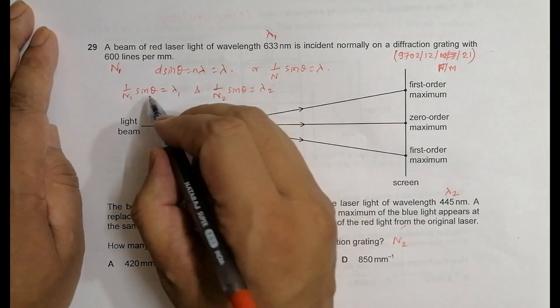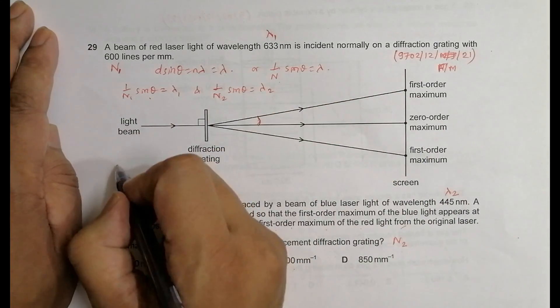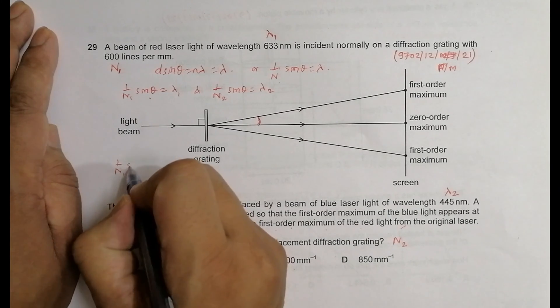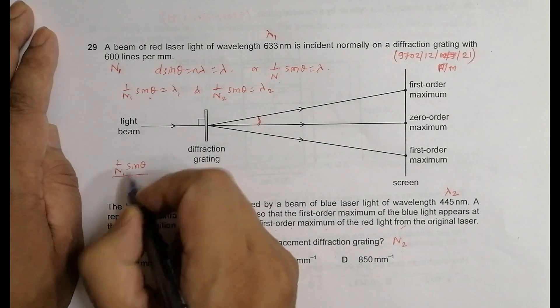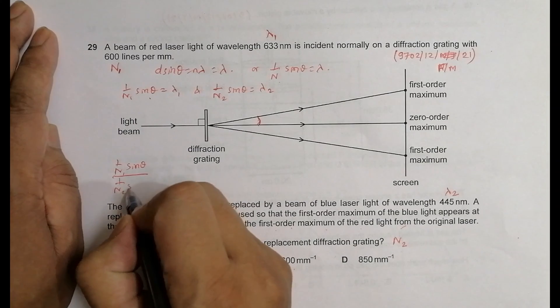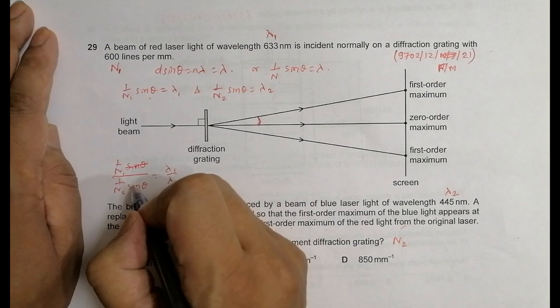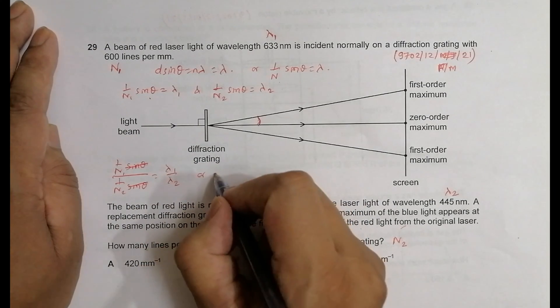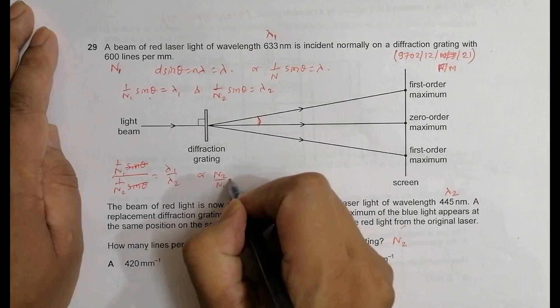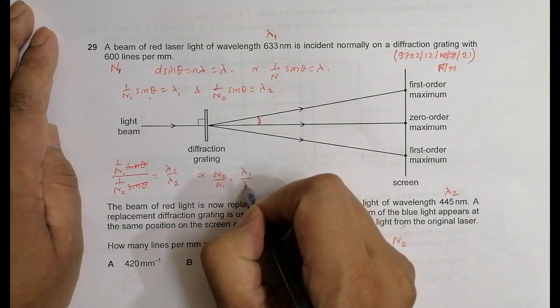Let's divide this equation by this, so it gives us 1 by n1 sine theta divided by 1 by n2 sine theta equals lambda 1 by lambda 2. This goes, which gives us n2 by n1 equals lambda 1 by lambda 2, or n2 equals lambda 1 by lambda 2 times n1.